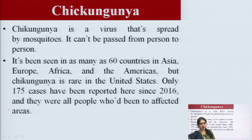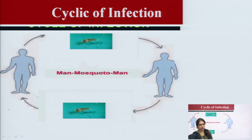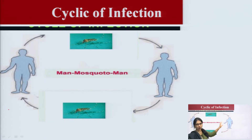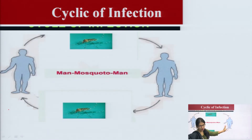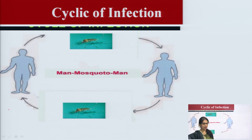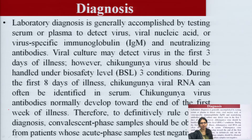It is an RNA virus. The cycle of infection runs from man to mosquito and mosquito to man — a mosquito-borne viral disease transmitted in humans by alpha virus, spread by the infected Aedes aegypti and Aedes albopictus.